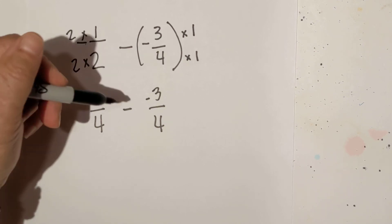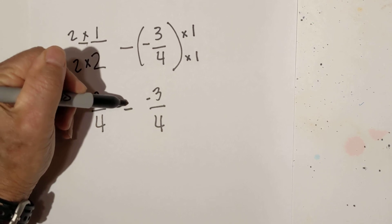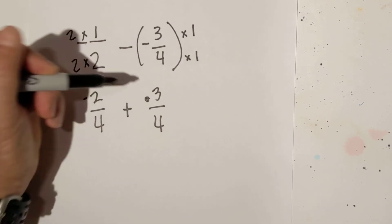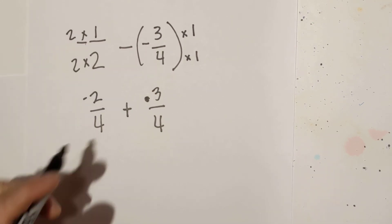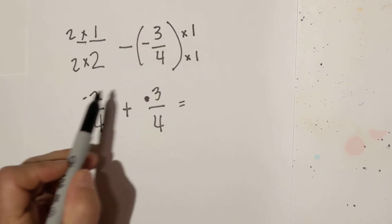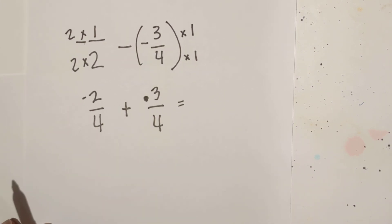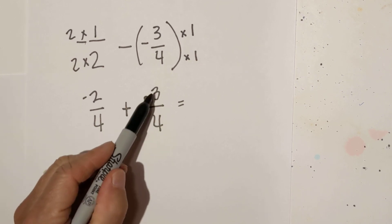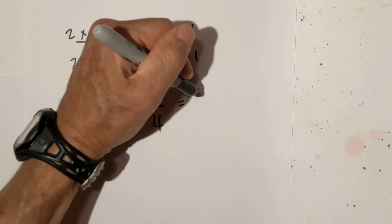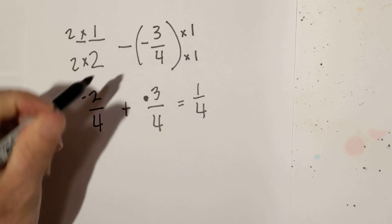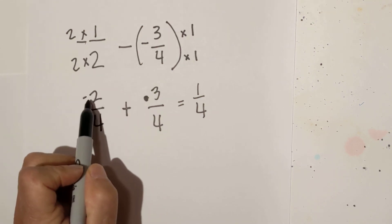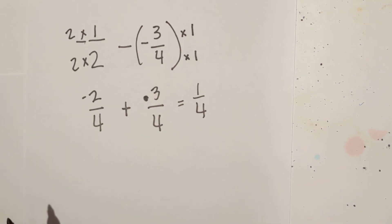So but remember whenever you have two negatives it is just like it is an addition problem. Whenever you add you keep the sign of the larger number. 3 fourths is larger than negative 2 fourths. 3 fourths minus 2 fourths is 1 fourth. And we are going to keep the sign of the larger number. So there we go.